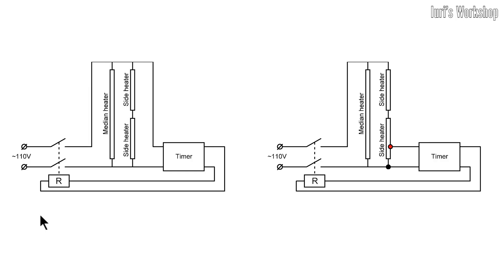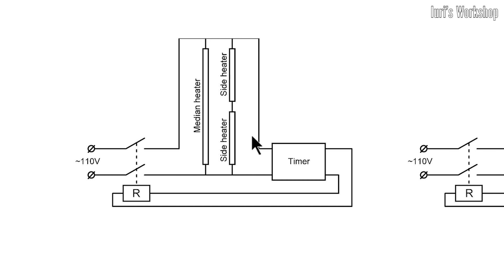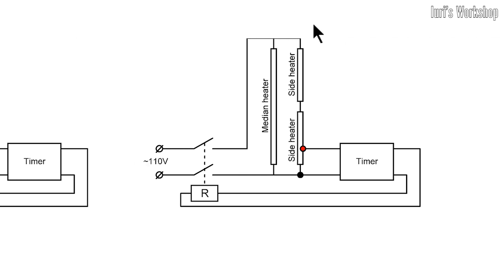And here we come to the most important difference between the more reliable toasters and the less reliable ones. In the right toasters, the timer is powered directly from the mains. And in the wrong toasters, the power to the timer is supplied from the voltage divider, in the role of which are the heating elements themselves.